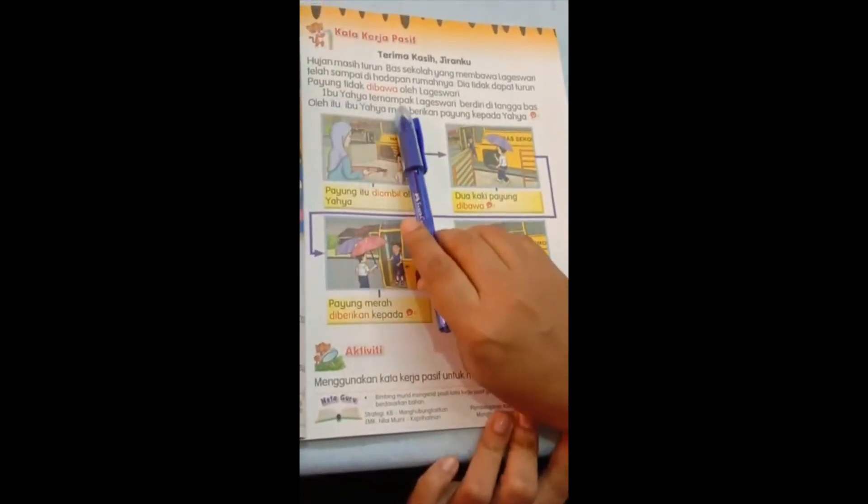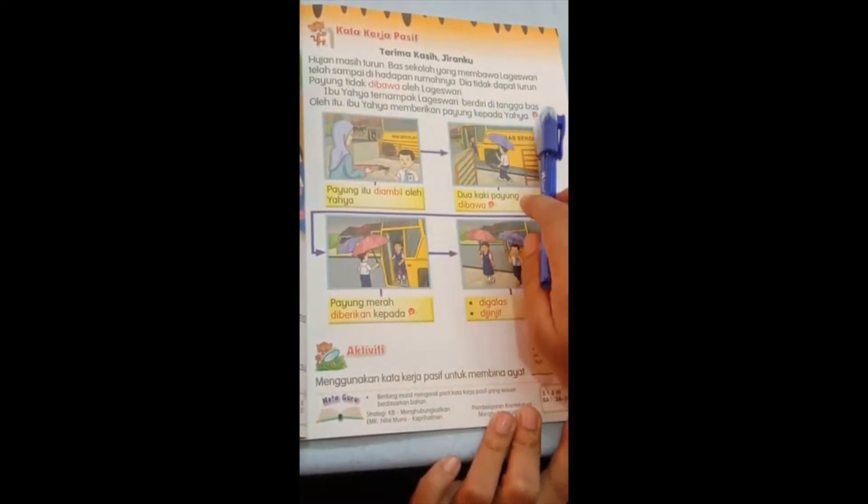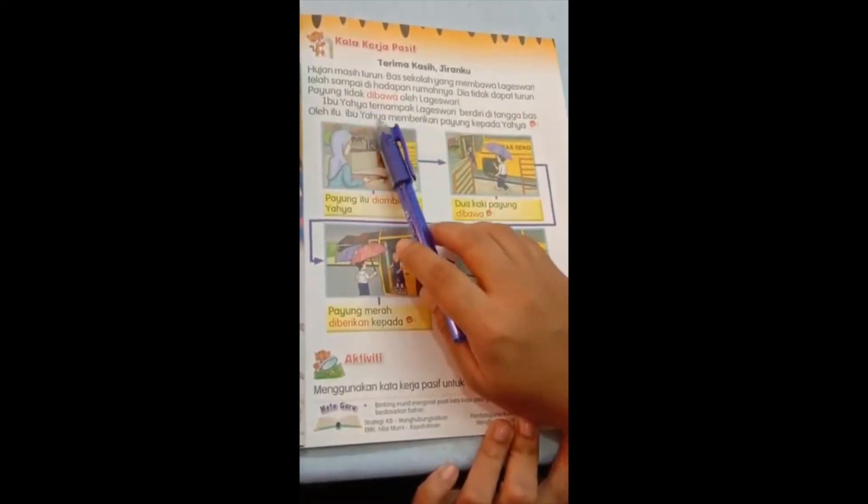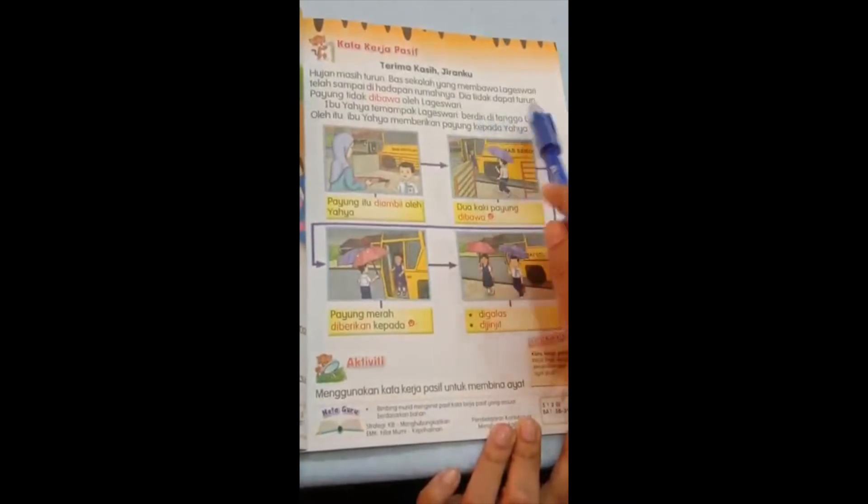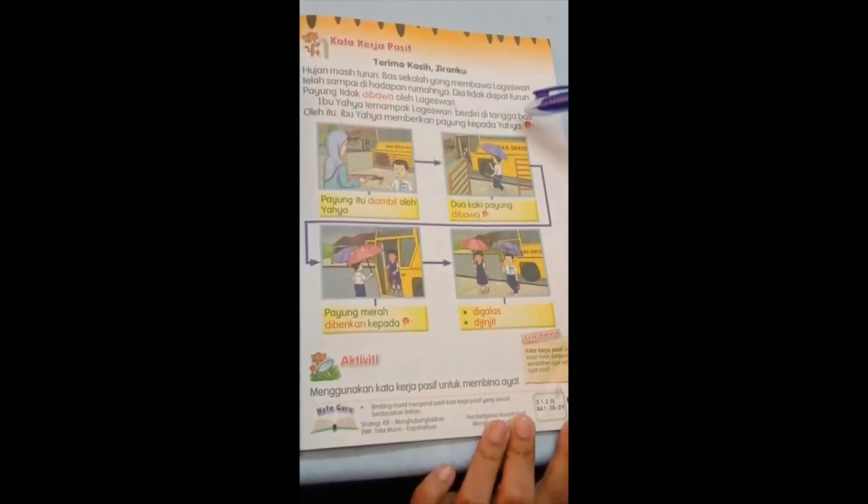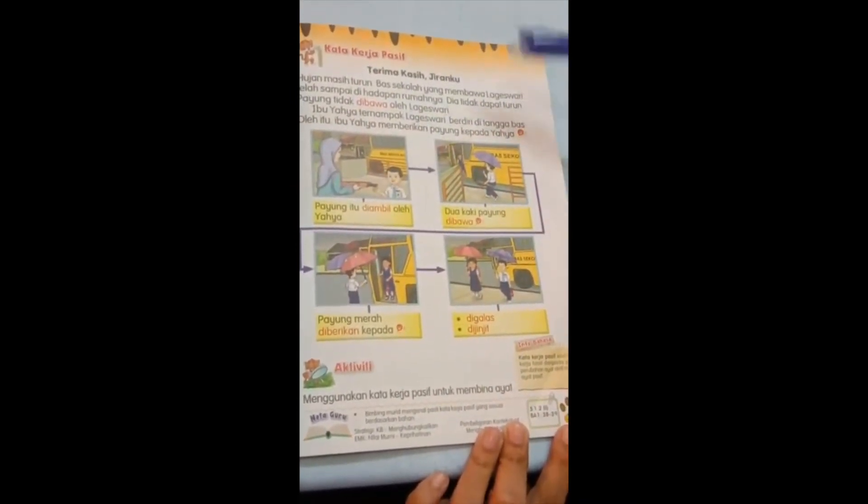Continue. Ibu Yahya ternampak Logeshwari berdiri di tangga bas. Oleh itu, Ibu Yahya memberikan payung kepada Yahya. So the story will continue from that. When the mother gave the payung to Yahya, what he did?